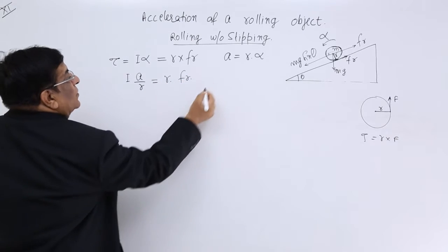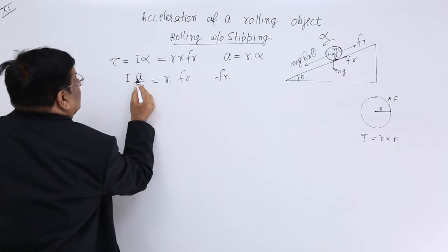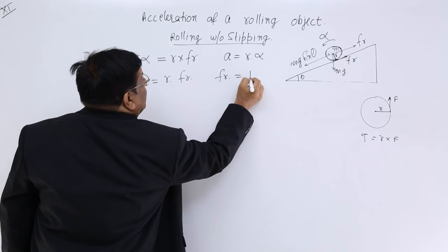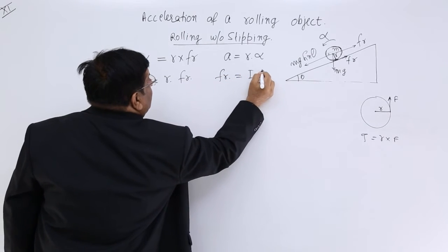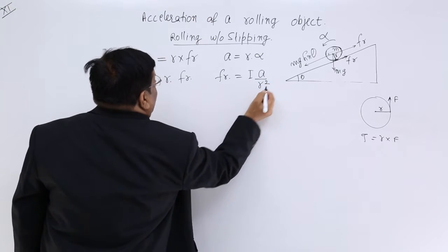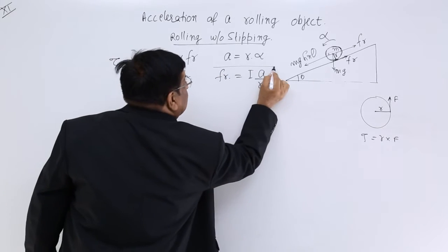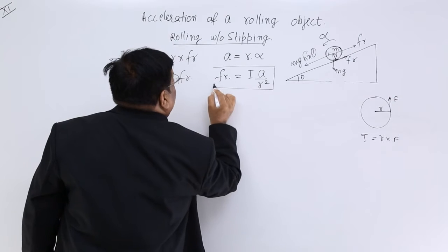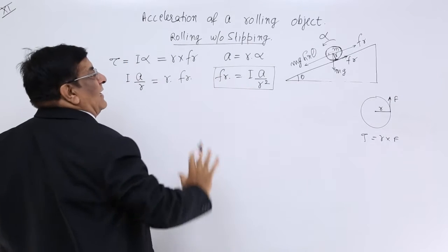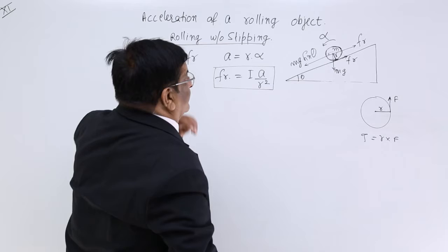Therefore, friction equals I into linear acceleration A upon R squared. We take this value of friction and keep it reserved for further calculation.